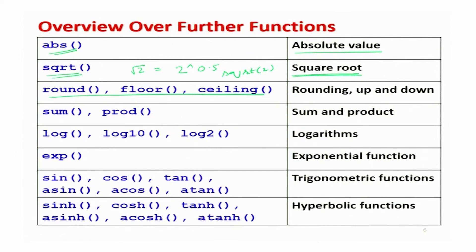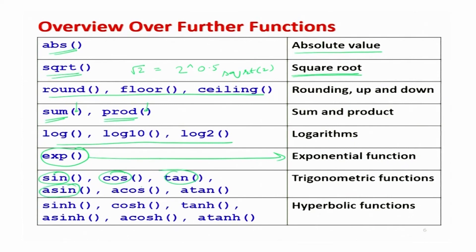We have the command sum for finding the sum of numbers, and prod for finding the product. For logarithms, we have log (natural log), log10 (log base 10), and exp for the exponential function. There are also trigonometric functions: sin, cos, tan, and their inverses asin, acos, atan, and hyperbolic functions sinh, cosh, tanh, asinh, acosh, atanh.